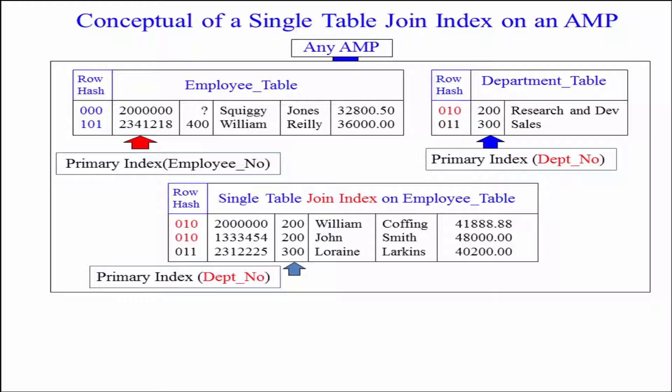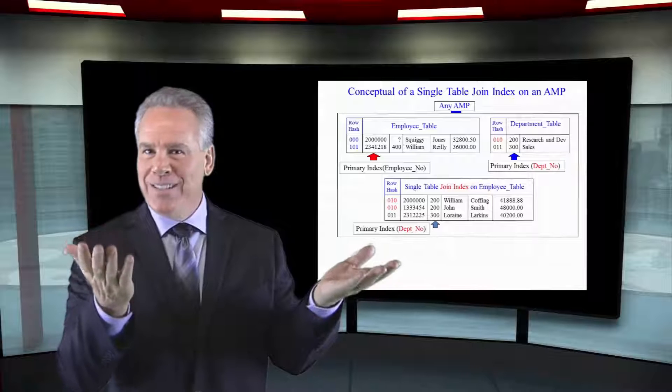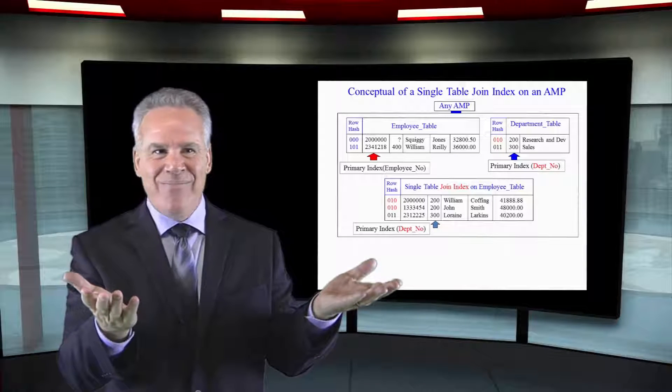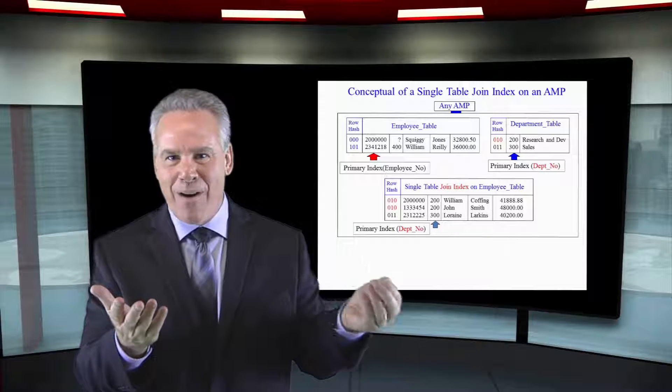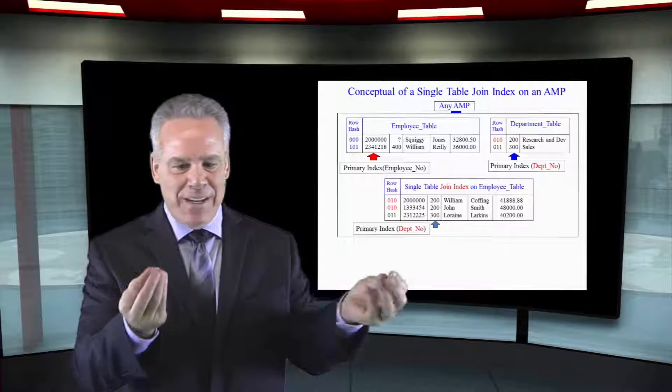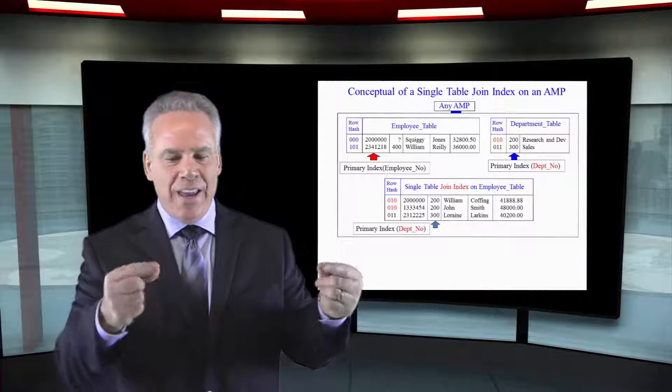But unfortunately, if someone queries on department number, it's a full table scan. Now secondly, when I join the employee table to the department table where DEPNO equals DEPNO, the employee table has to be redistributed by department number because DEPNO and DEPNO are how they join.